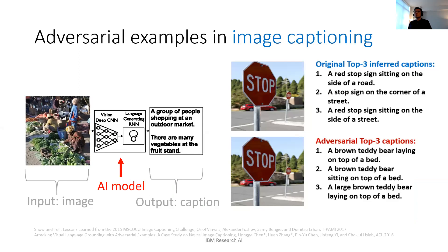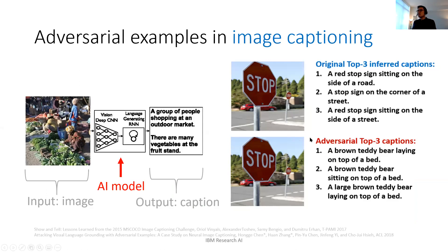The first example is image captioning, where the original task is to generate a caption describing the input image. A stop sign image correctly produces captions like 'a red stop sign sitting on the side of a road.' However, we can generate an adversarial example that looks totally the same but produces a completely wrong caption like 'a brown teddy bear laying on top of a bed.' We can even make these captions generated at our desire.